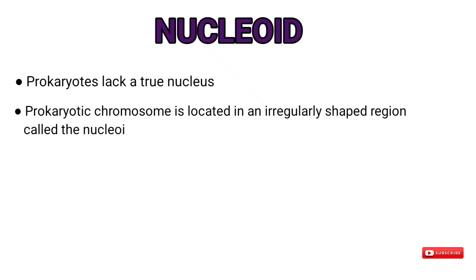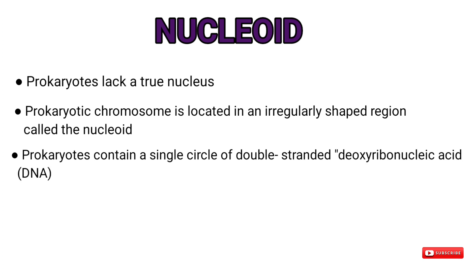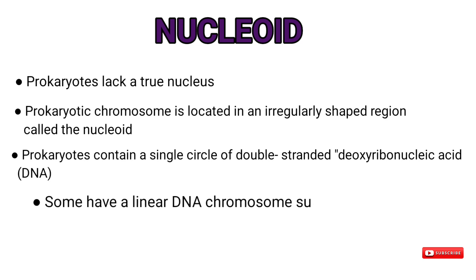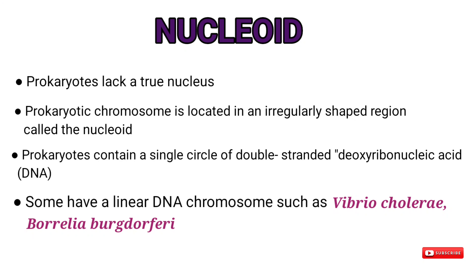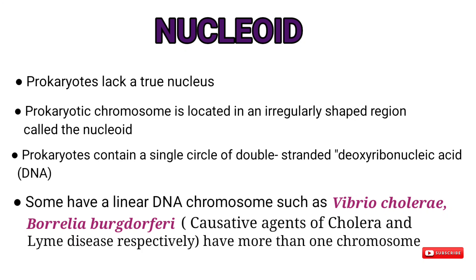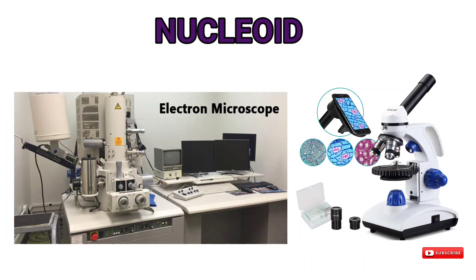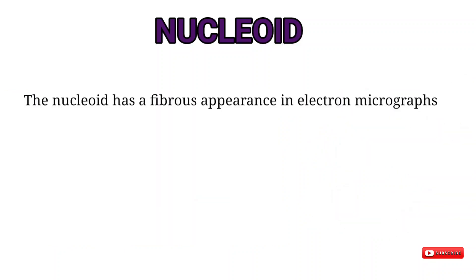Prokaryotes lack a membrane-delimited nucleus. The prokaryotic chromosome is located in an irregularly shaped region called the nucleoid. Prokaryotes typically contain a single circle of double-stranded DNA, but some have a linear DNA chromosome, and some — such as Vibrio cholerae and Borrelia burgdorferi, the causative agents of cholera and Lyme disease — have more than one chromosome. Both electron and light microscopic studies have been important for understanding nucleoid structure and function, especially during active cell growth and division.